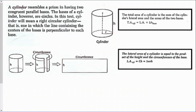A cylinder resembles a prism in having two congruent parallel bases. The bases of a cylinder, however, are circles. In this text, cylinder will mean a right circular cylinder — one in which the line containing the centers of the bases is perpendicular to each base, so this would be a right angle.